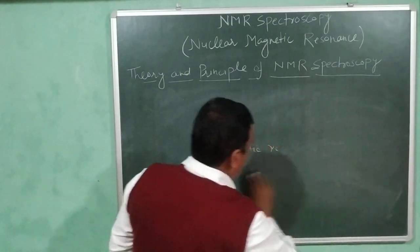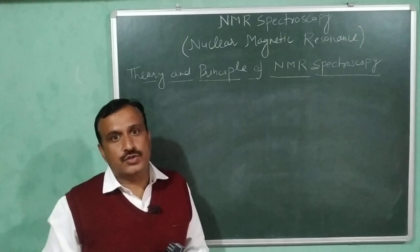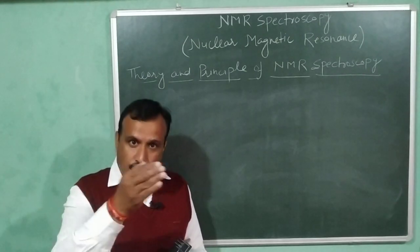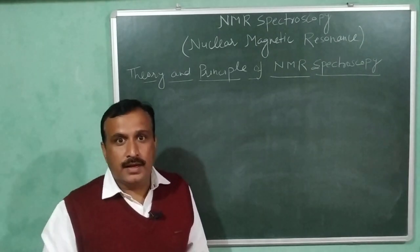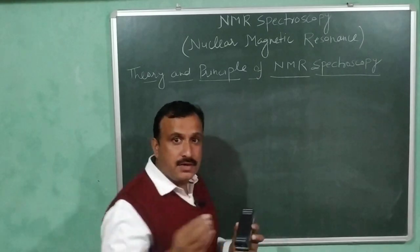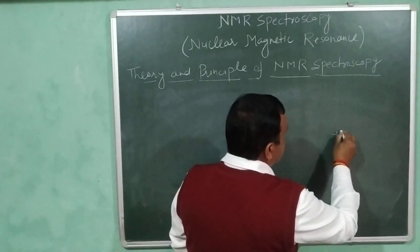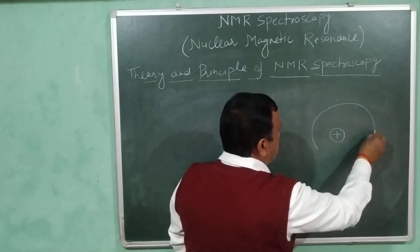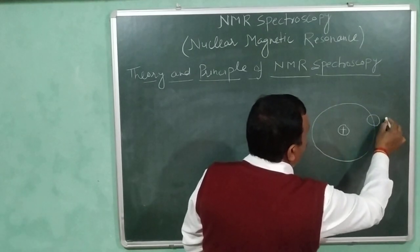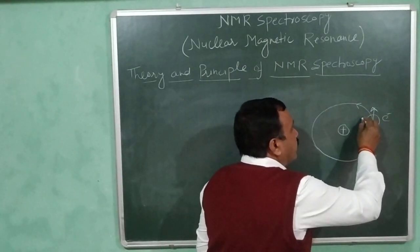Just like electrons, nuclear particles — that is protons and neutrons — also spin about their axis. We know that the electron exhibits two types of motion: it revolves around the nucleus, called orbital motion, and at the same time it also spins about its own axis. Let us represent this diagrammatically. I am considering the hydrogen atom, which has one proton in its nucleus and one electron revolving around it. This electron revolves around the nucleus as well as spins about its own axis.